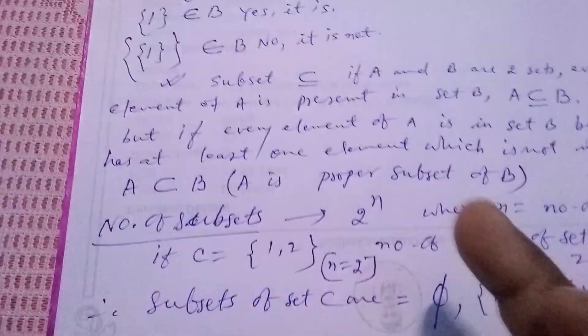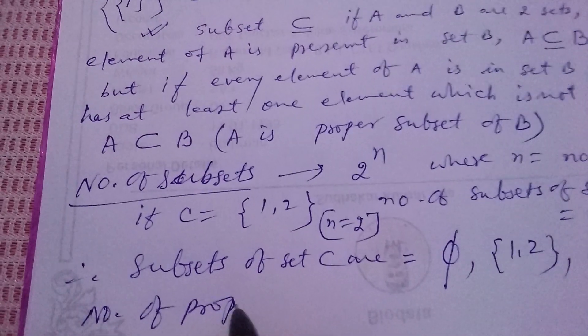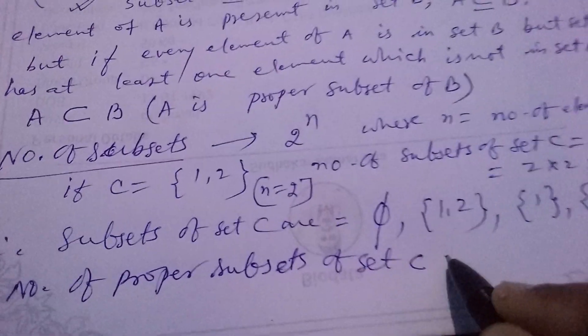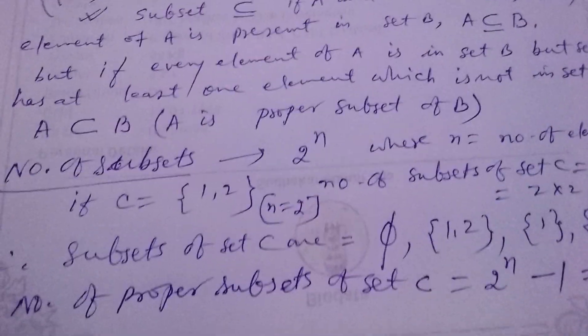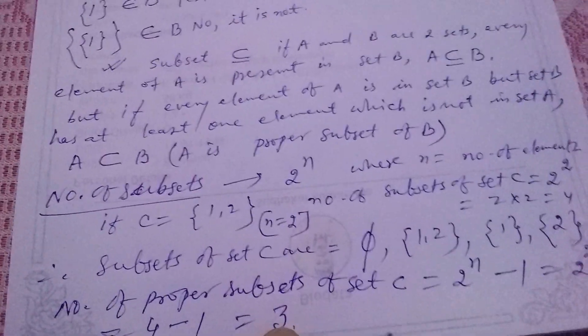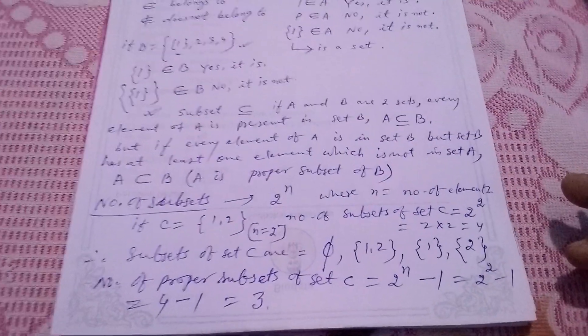For the number of proper subsets, the formula is 2 to the power n minus 1, that is 2² − 1 = 4 − 1 = 3. So the number of proper subsets of C is 3, while the total number of subsets is 4. In this way we find subsets and proper subsets. Thank you; if you like, please subscribe.